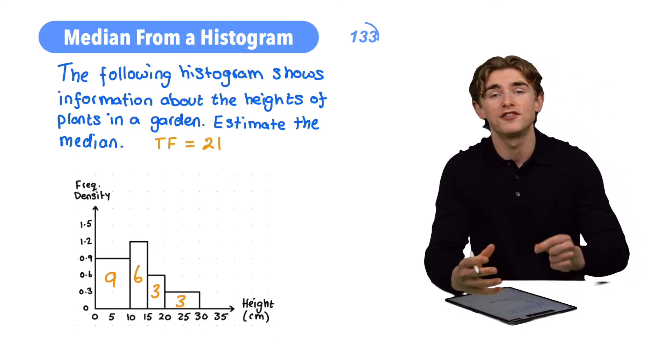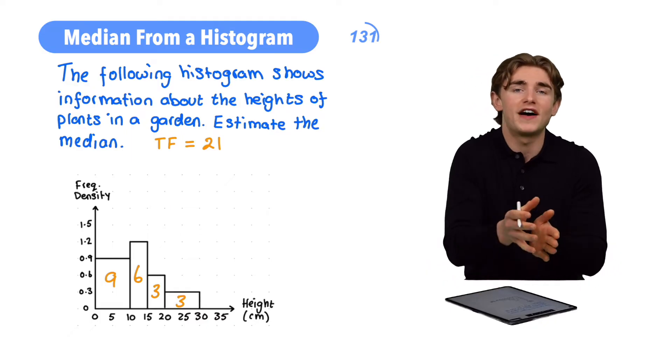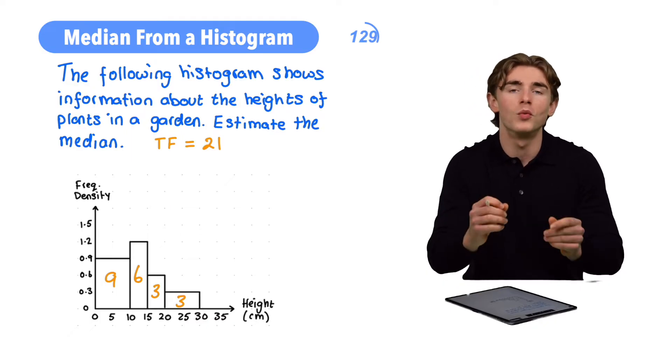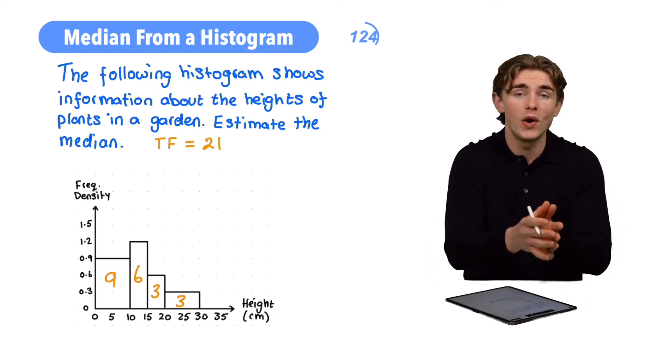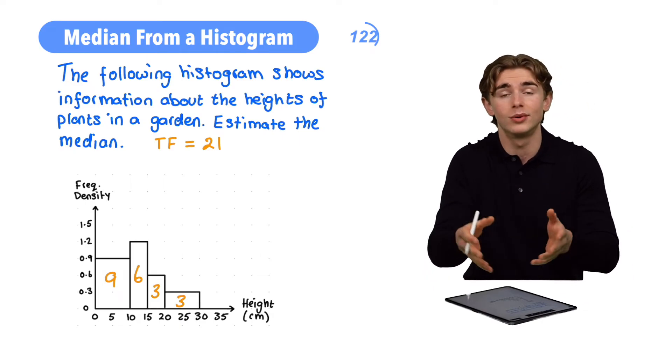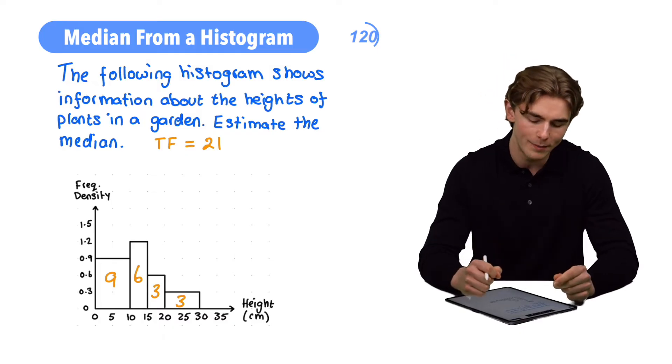Now if we can remember, to find which value represents the median, we can add 1 to our total frequency and then divide that by 2. That's going to tell us which of our 21 frequencies essentially represents our median.